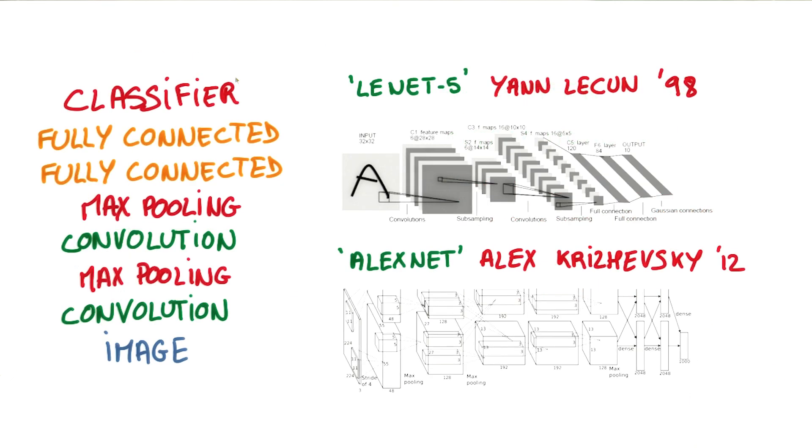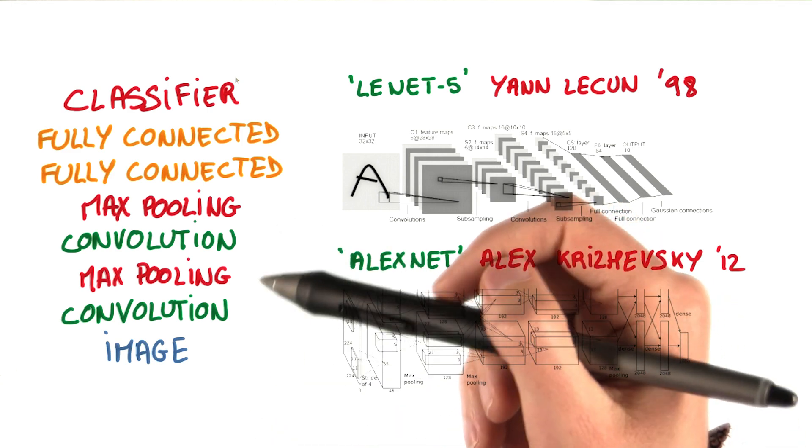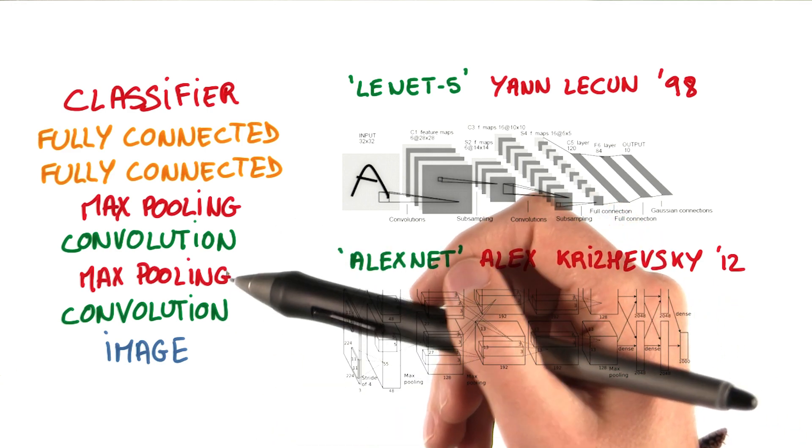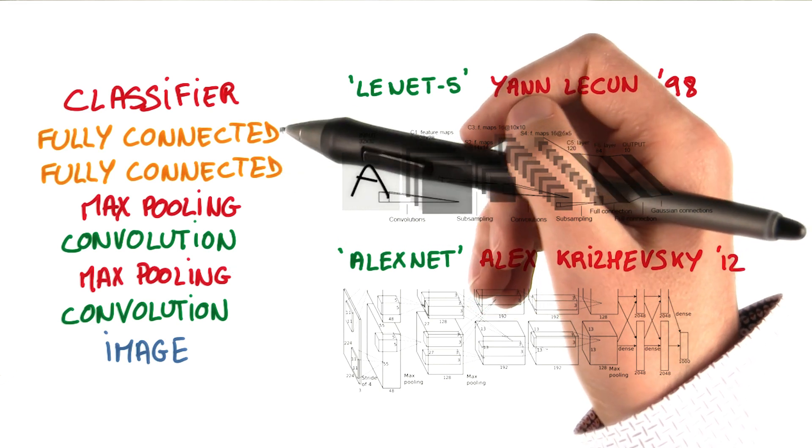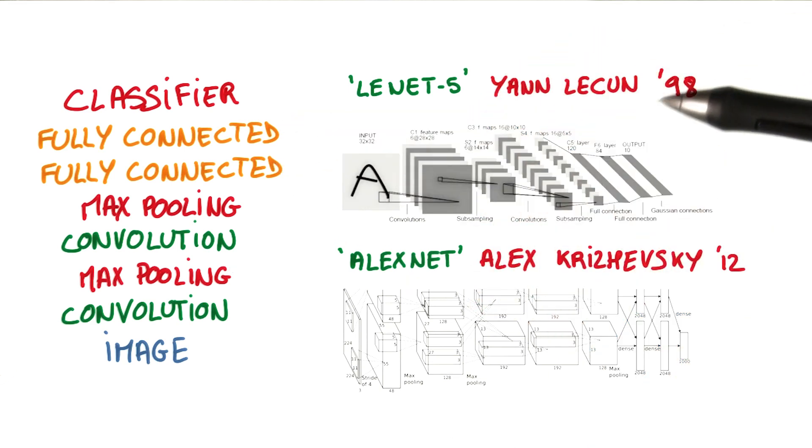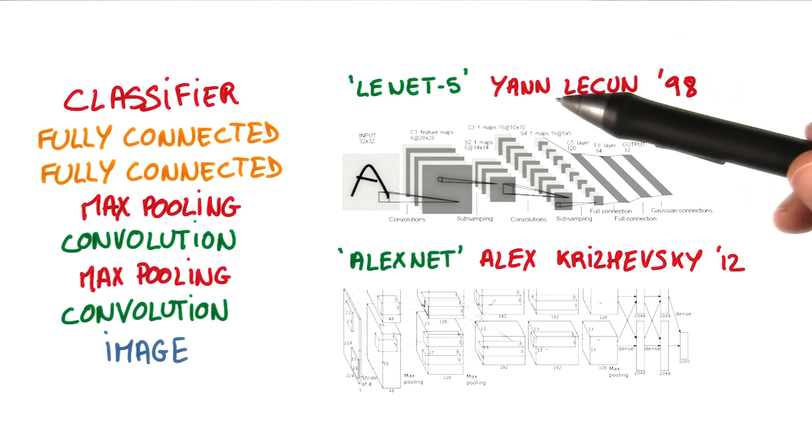A very typical architecture for a ConvNet is a few layers alternating convolutions and max pooling, followed by a few fully connected layers at the top. The first famous model to use this architecture was LeNet-5, designed by Yann LeCun to do character recognition back in 1998.